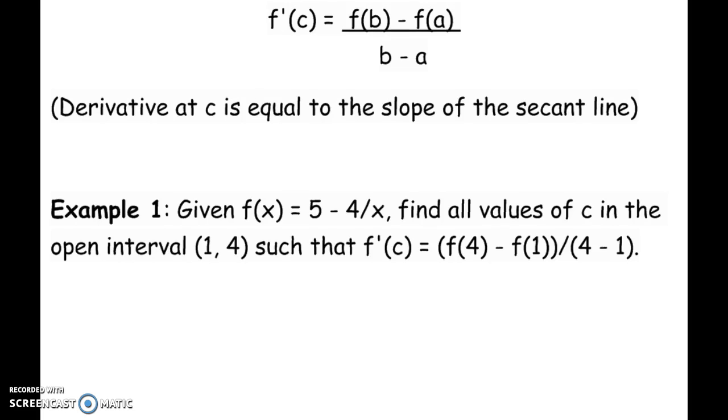If we have this function, f of x is equal to 5 minus 4 over x. Okay, that's not 5 minus 4 over x. That would be the same as 1 over x. I just didn't write it like this. This would be 5 minus 4 over x.